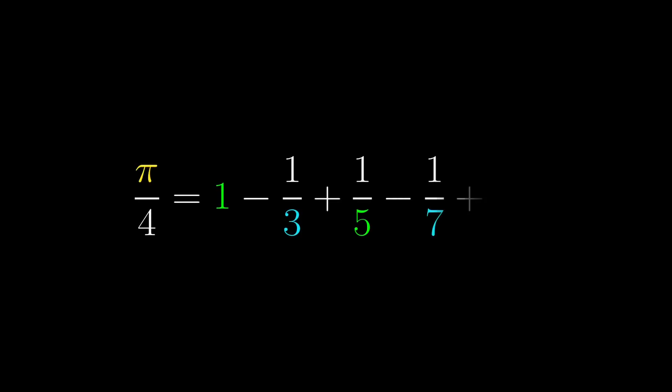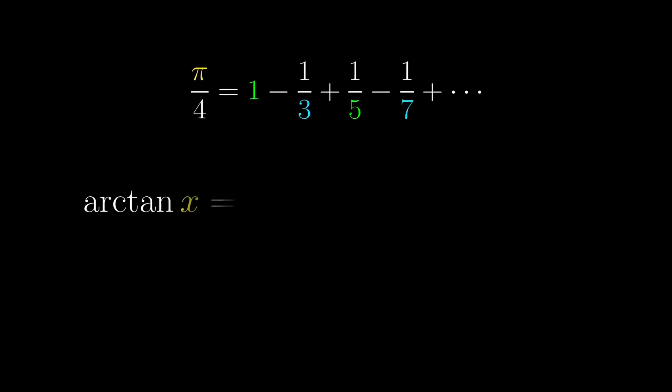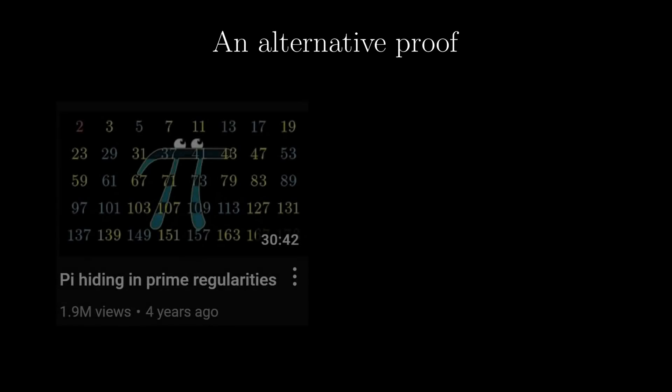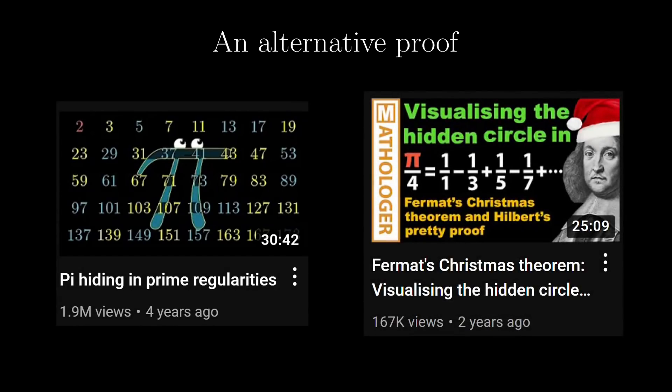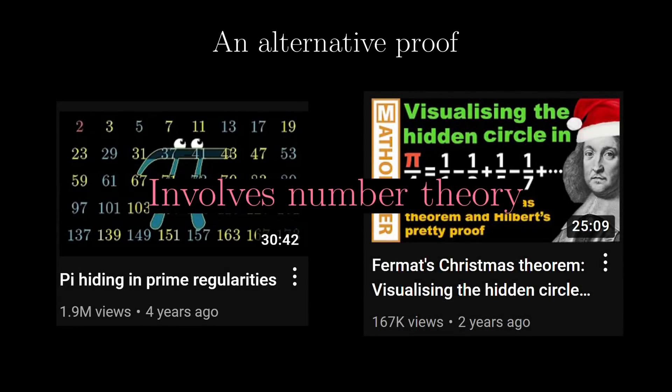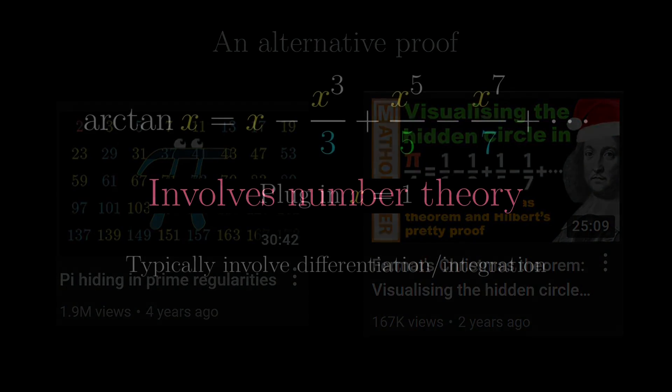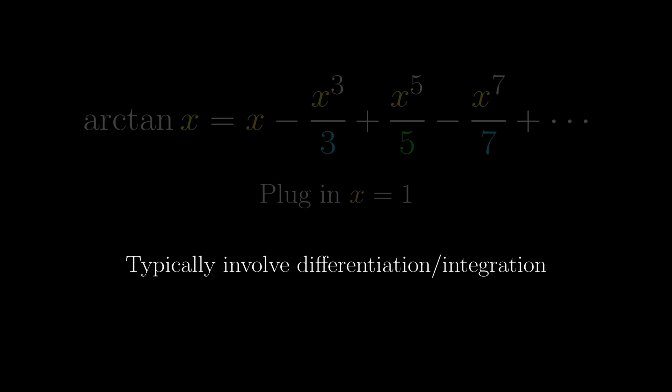You might know this series involving pi, but the usual proof involves essentially reproving this series for arctangent, and then plugging in x equals 1, but this typically involves differentiation or integration. There are alternative proofs, which both Friedewald and Brown and Mathology have covered before, but those involve complicated number theoretic arguments. Is it possible to avoid both number theory and differentiation or integration at the same time?